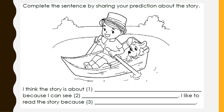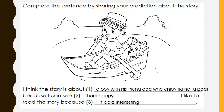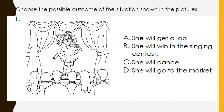Did you understand our lesson? Okay, now let us have an activity. Complete the sentence by sharing a prediction about the story: 'I think the story is about blank because I can see blank. I like to read the story because blank.' Now, here is the second activity: choose the possible outcome of the situation shown in the pictures.